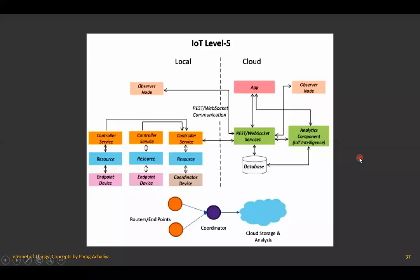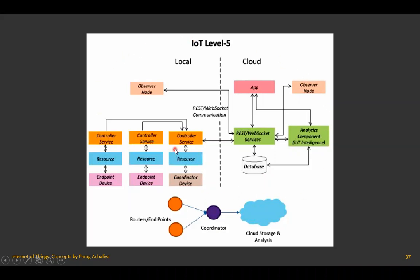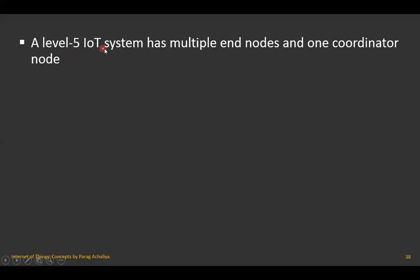This is level five. The difference between level four and level five is that in level five there is one coordinator node in between the end nodes and the cloud. The rest of the structure is similar to level four — there are endpoint devices, resources, services, and an observer at the local side, while the cloud side has a database, web services, IoT application, and observer node.